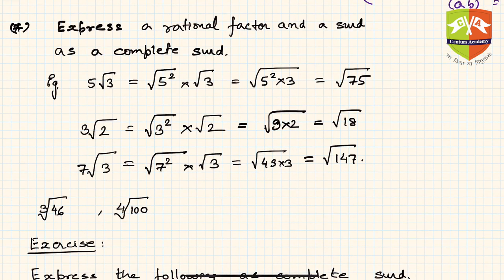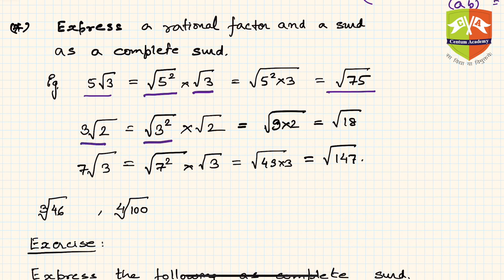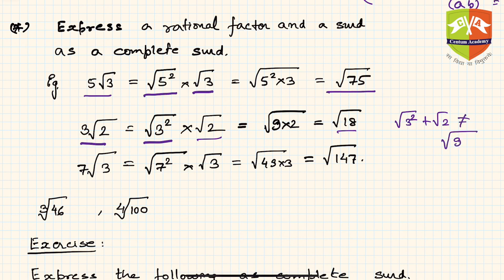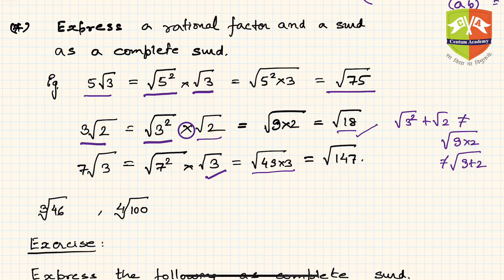The second property is the reverse: you can express a rational factor times a surd as a complete surd. For example, 5√3 = √(5² × 3) = √75. Similarly, 3√2 = √(9 × 2) = √18 — but be very careful: you can only combine roots when there is a multiplication sign, not addition. And 7√3 = √(49 × 3) = √147.